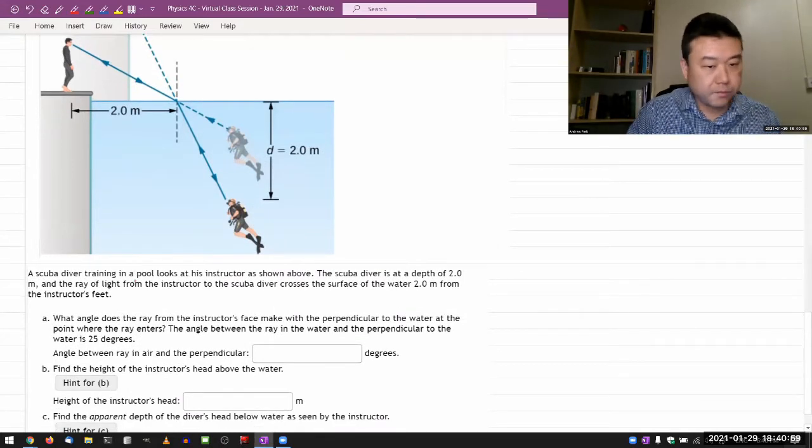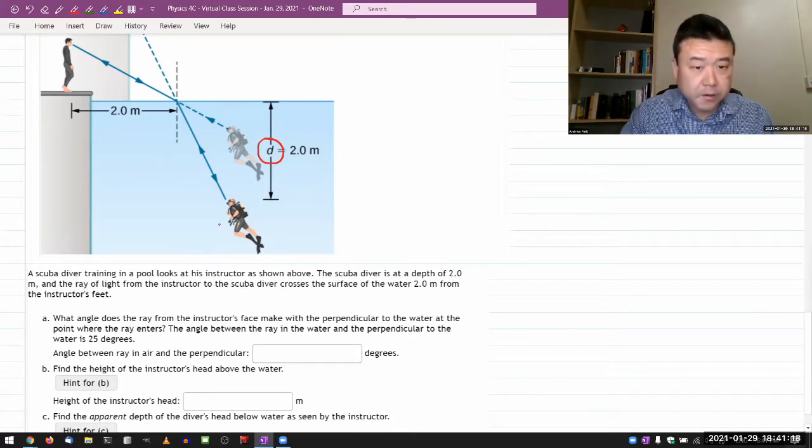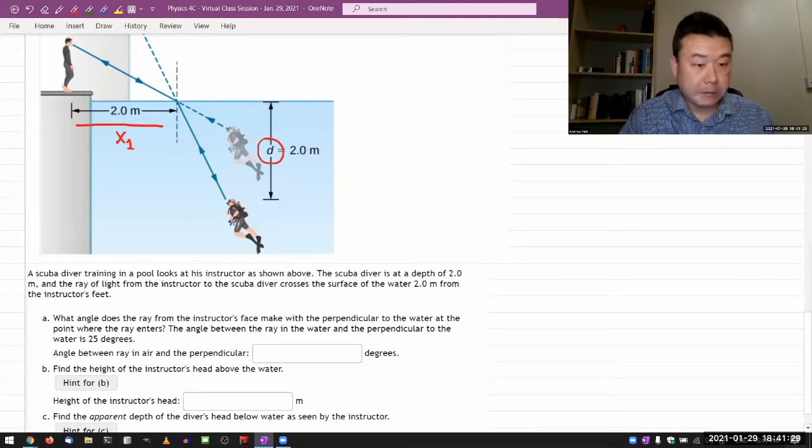A scuba diver training in a pool looks at his instructor as shown above. The scuba diver is at a depth of two meters, depth of d, two meters. And the ray of light from the instructor to the scuba diver crosses the surface of, so let me just call that x1, surface of the water at two meters from the instructor's feet. What angle does the ray from the instructor's face make with the perpendicular, so this is the perpendicular to the water at the point where the ray enters. So this is the angle that they're asking us about, theta a.